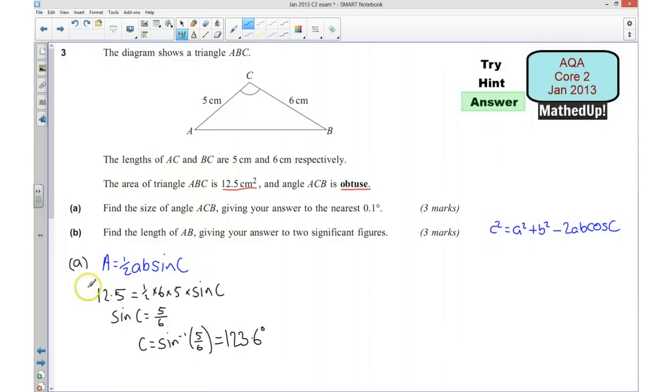Okay, so that brings us to part B. So in part B we decided earlier that to find the length AB we're going to use this formula here. So I'm just going to label all the sides here just to remind us that that's going to be side C. That's going to be side A and that's going to be side B.